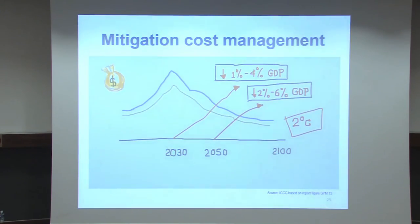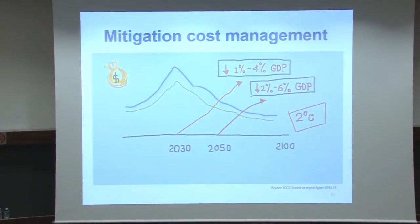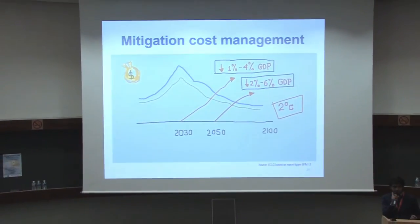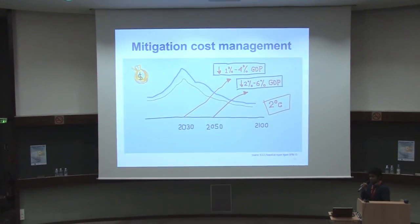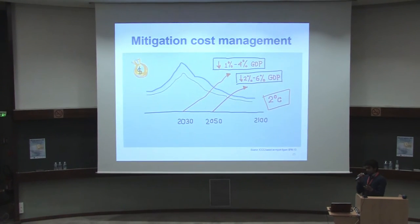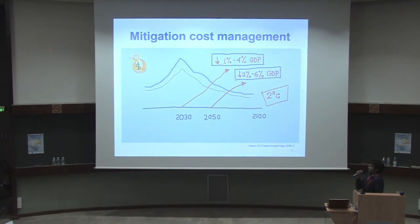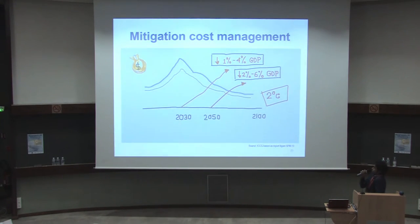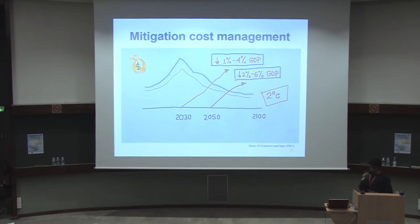How will this mitigation cost be managed by countries? Using the Integrated Assessment Modelling approach, it is predicted that in 2030 there will be a 1 to 4% GDP loss, and in 2050 a 2 to 6% GDP loss globally — varying country to country. But if you look at the annual growth rate, the reduction is just less than 0.12% in both cases, so it will not vary that much.